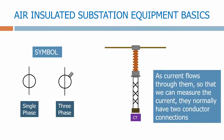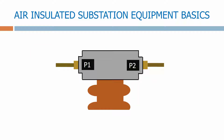As current flows through them so that we can measure the current, they normally have two conductor connections. The other way that we can identify a CT in a substation are the P1 and P2 labels. These define the orientation of the CT in the circuit, which is important as we need to know which direction the current is flowing in.